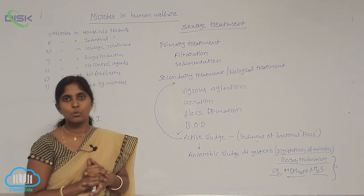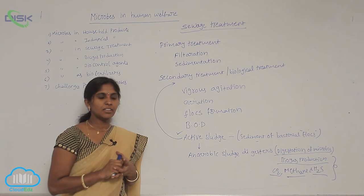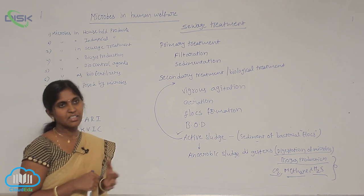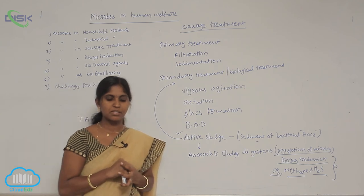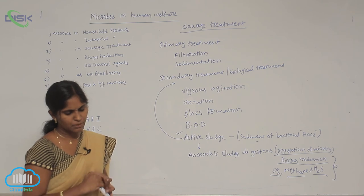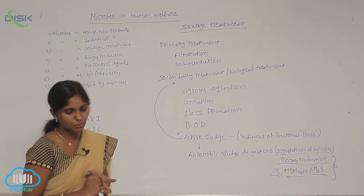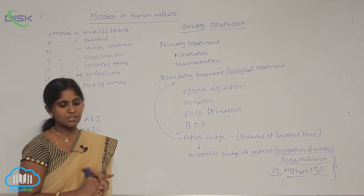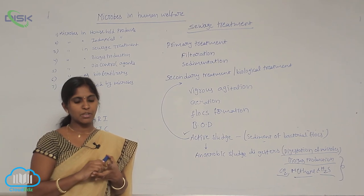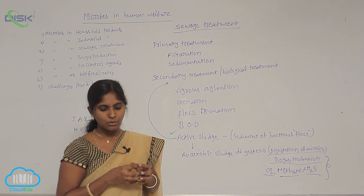Bdellovibrio bacteria are being used for the cleaning and purification of Ganga's water. Additionally, toxic substances are sometimes accidentally released into the environment, especially in the form of oil and chemical spills, contaminating land and water. The process of using microbes to remove such toxic substances is called bioremediation. A best example is the bacteria Pseudomonas putida, used for bioremediation.